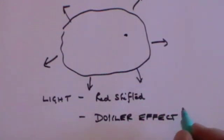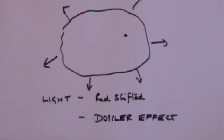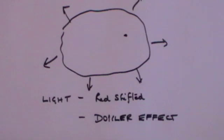I can explain that because you will have all observed it. When an ambulance comes down the road, as it's coming towards you the pitch of the siren is much higher than when the ambulance passes you and goes away from you. The actual pitch of the siren doesn't change at all — it's just that when it's coming towards you the pitch is raised, and when it goes away from you the pitch is lowered.